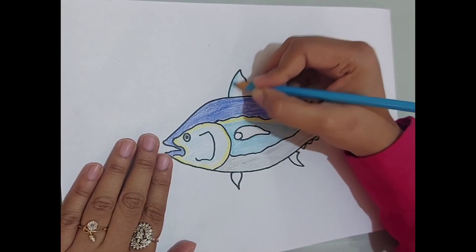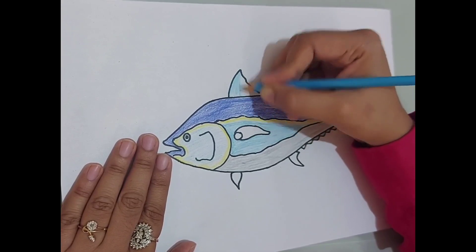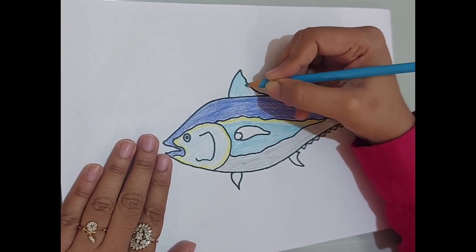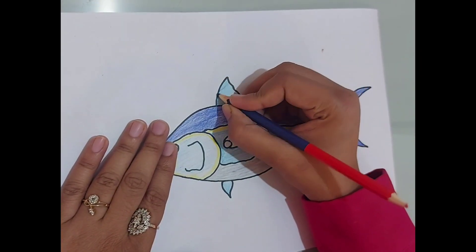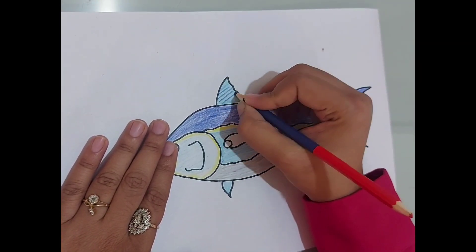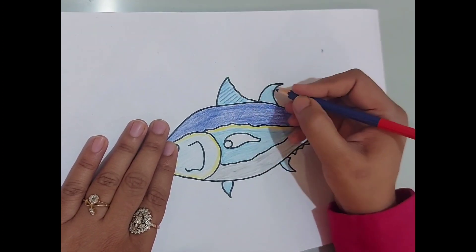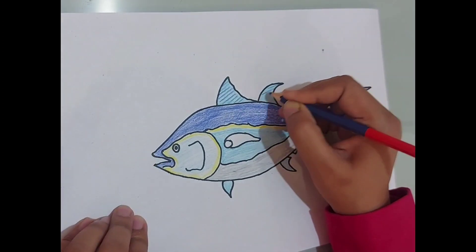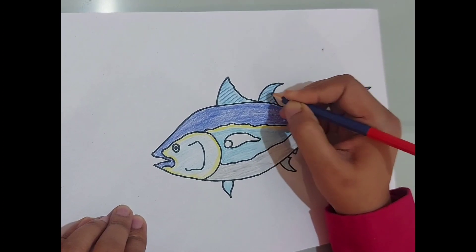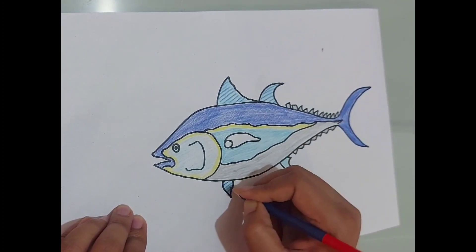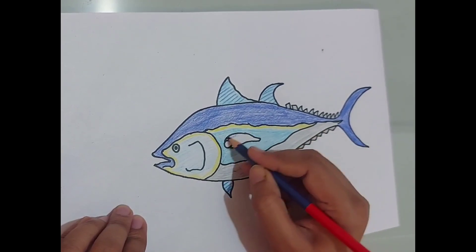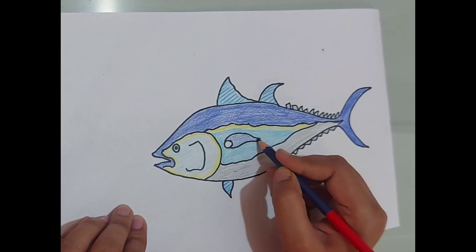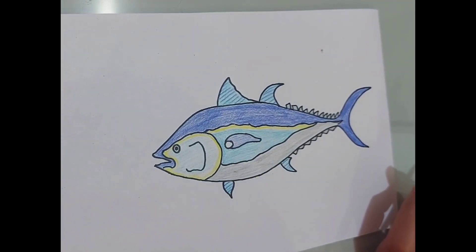Color the fins sky blue color, and we will draw some lines with dark blue color in the fins. And our drawing is complete. So friends, if you like my videos, please like, comment, and share. And don't forget to subscribe to my YouTube channel, Be Artistic with Sim, for more such interesting videos. Stay tuned to my channel. Till then, keep watching, keep creating. Bye bye, take care.